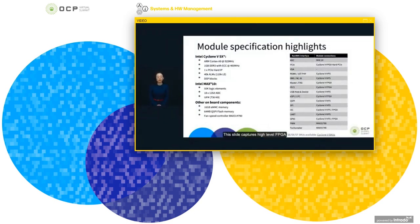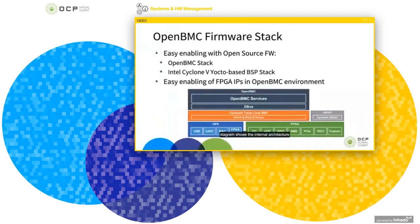This slide captures high-level FPGA features — it's here for reference. The chart on the right side contains the details of the bus assignment for the module. This diagram shows the internal architecture of the OpenBMC implementation. Intel's Cyclone 5 SoC family supports Yocto Linux BSP and the latest Linux solution integrations. It's fairly easy to integrate OpenBMC with its dbus-based infrastructure on top of Cyclone 5 Yocto Linux. The usage of the FPGA IP block follows the same path, as each IP can be easily mapped to Linux Memory Map IO. The appropriate Linux driver will export APIs through the dbus interface.